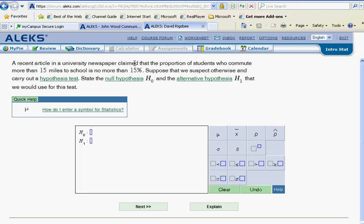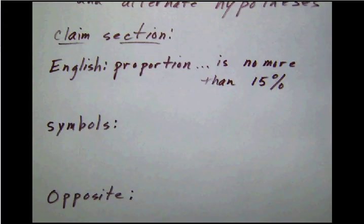So I'll try to go into ALEKS here and find exactly the sentence where the claim is. Oftentimes, they'll actually use the word claim. And so that kind of gets us on the right track here. A recent article in a university newspaper claimed, and here it comes, that the proportion of students, and so I'll begin to write part of that out here as I work through this in my form.